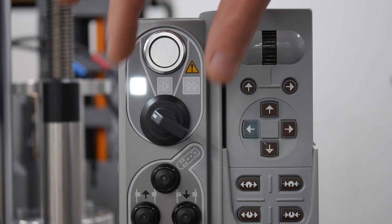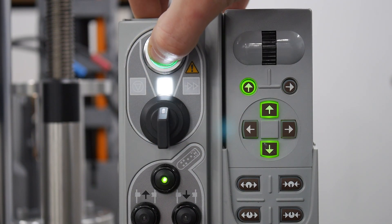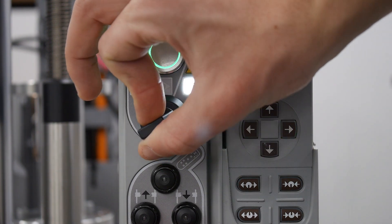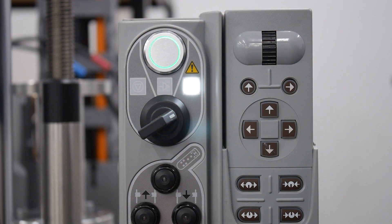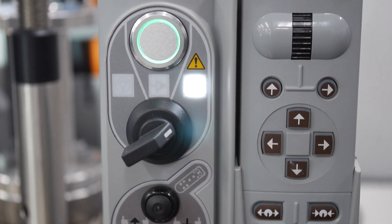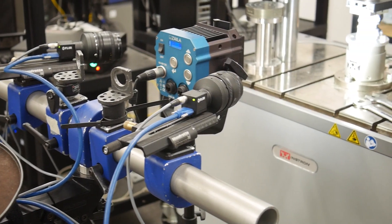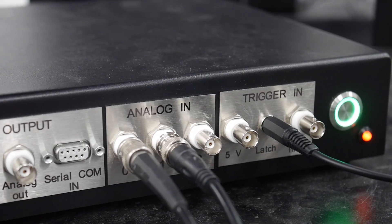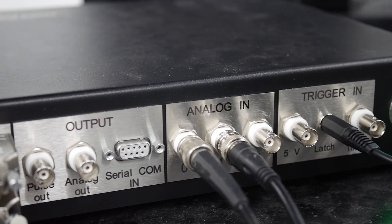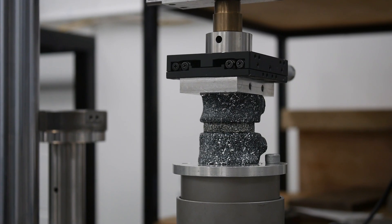I load the implant using a test machine. The intervertebral disc sees loads exceeding body weight due to the additional force from muscles and this must be considered when testing. Data from the cameras is fed into the computer where it can be processed and analysed. Combined with thermal imaging data, I use this information to inform the design and what I might need to consider changing in subsequent iterations.